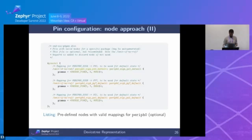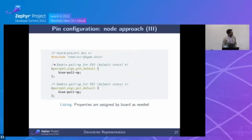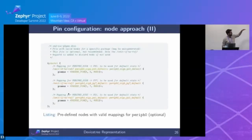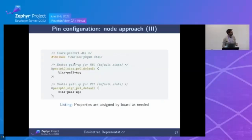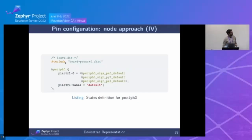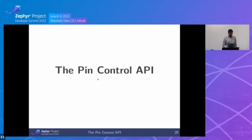In the node-based approach, pre-defined nodes typically don't include pin properties like pull-up. In the board file, if you need pull-up for signal A, you just add an override. From the peripheral perspective, a state references all the signal nodes — `pinctrl-0` represents default and lists all assigned pins.